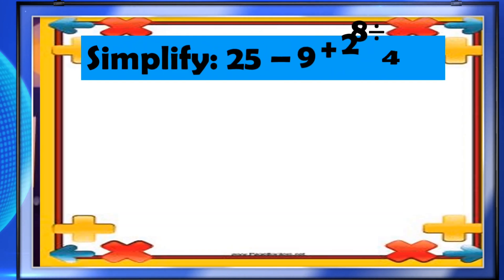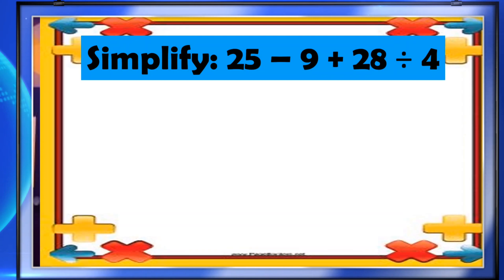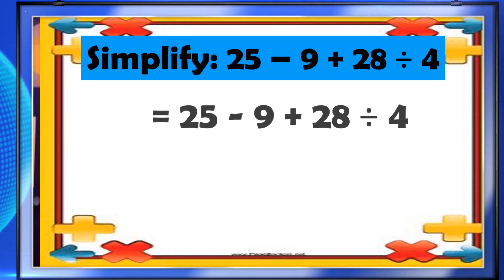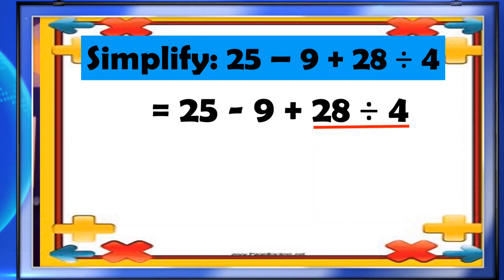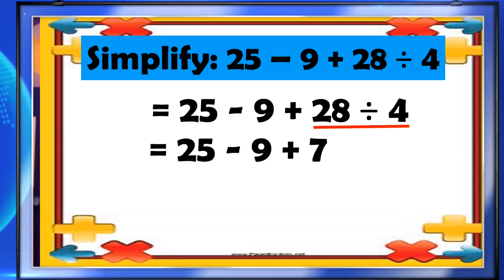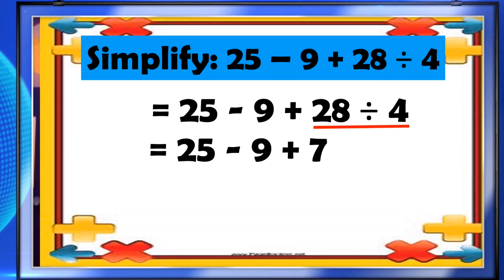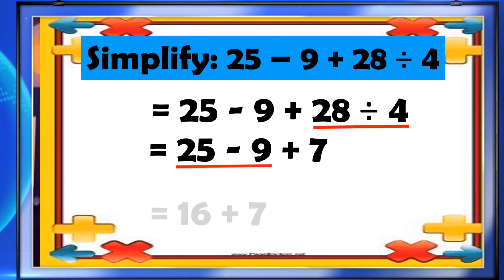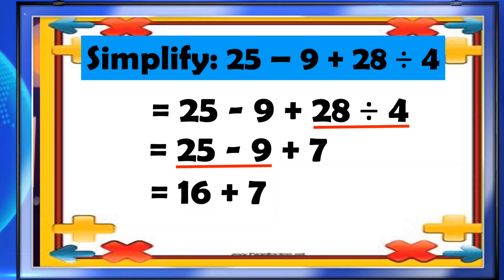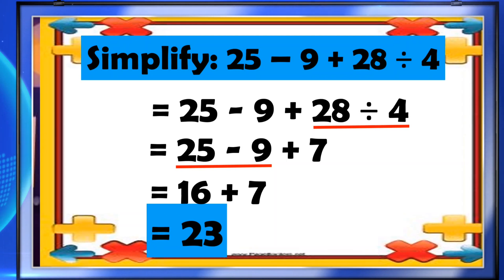Second example: simplify 25 minus 9 plus 28 divided by 4. We have three operations: subtraction, addition, and division. The first thing we have to do is divide 28 by 4, and that will give you 7. Now we have 25 minus 9 plus 7. Now we have to subtract: 25 minus 9 equals 16. Then add 7. That will become 23.